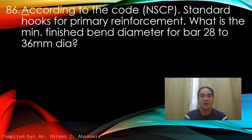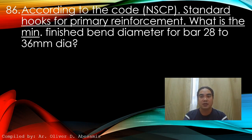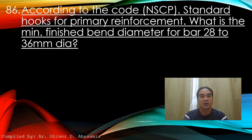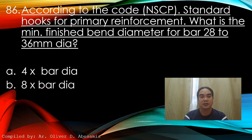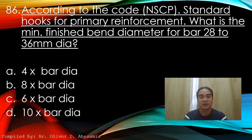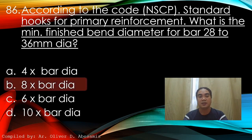Question 86: According to the NSCP code, for standard hooks from primary reinforcement, what is the minimum finish bend diameter for bars 28 to 36mm in diameter? A) 4 times bar diameter, B) 8 times bar diameter, C) 6 times bar diameter, D) 10 times bar diameter. Answer: B) 8 times bar diameter.